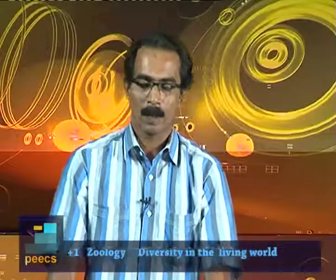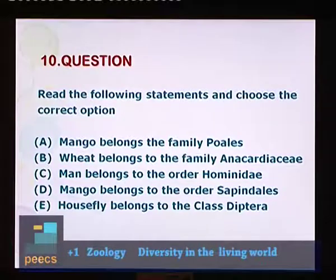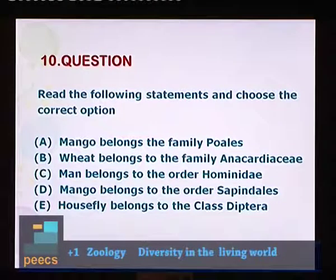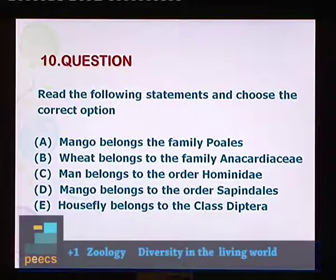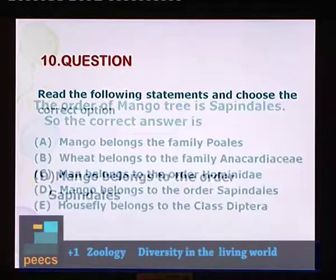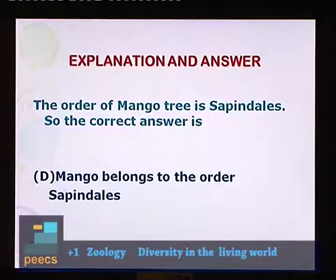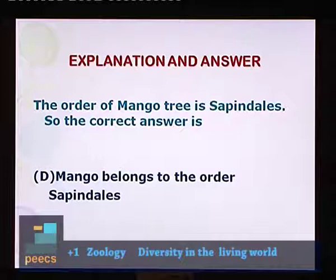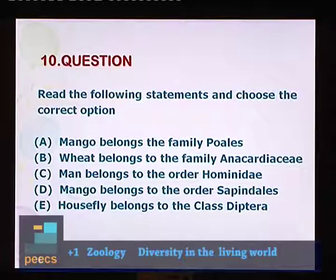Question 10: Read the following statements and choose the correct option. A. Mango belongs to the family Poales. B. Wheat belongs to the family Anacardiaceae. C. Man belongs to the order Hominidae. D. Mango belongs to the order Sapindales. E. Housefly belongs to the class Diptera. The order of the mango tree is Sapindales. So the correct answer is D — Mango belongs to the order Sapindales.